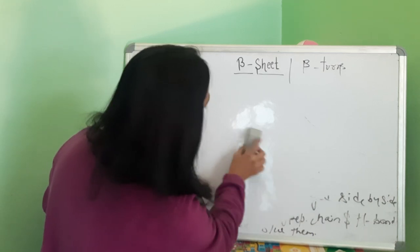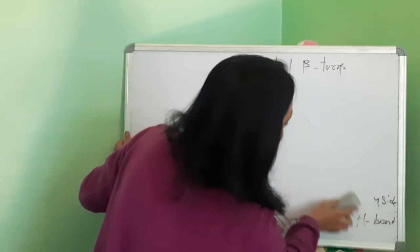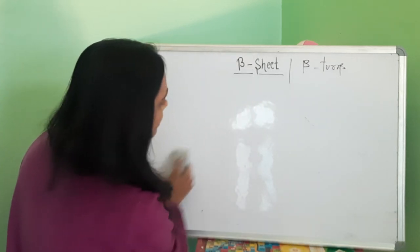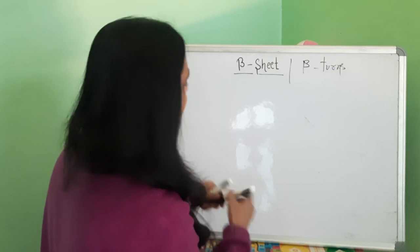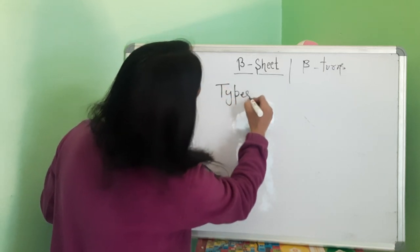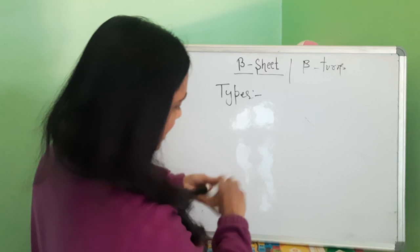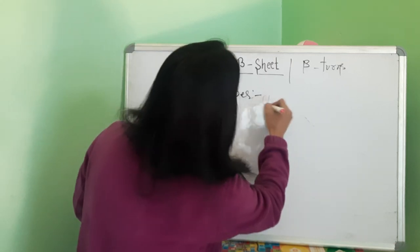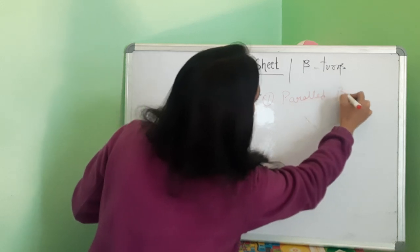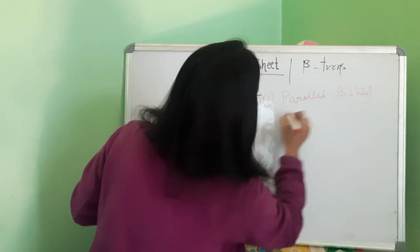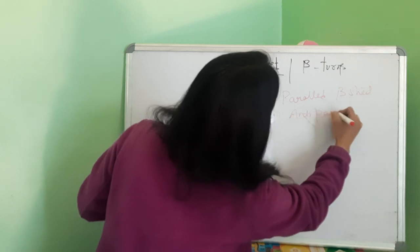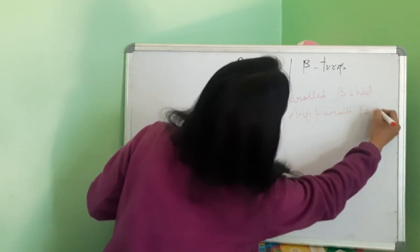We will now discuss two different types of beta-sheet structure. There are two types: one is parallel beta-sheet, and another one is anti-parallel beta-sheet.